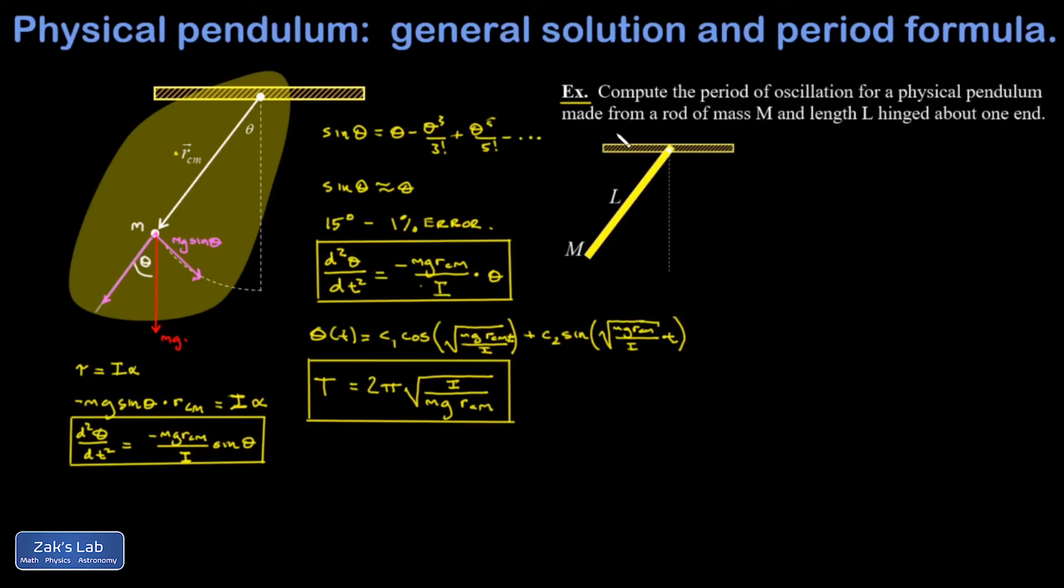So let's apply this real quick to a rod hinged about one end. And what you have to remember is that the moment of inertia of a rod rotating about one of its ends is one-third mL squared. And I'm just going to plug that into our new period formula.